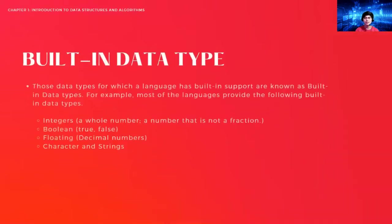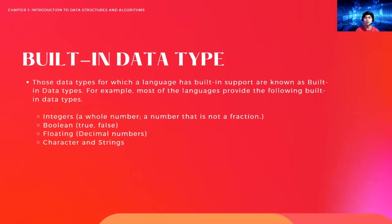When we say built-in, it means the language itself supports these data types. The most common built-in data types are: integers — whole numbers that are not fractions; boolean — true or false, one or zero; floating — decimal numbers; character; and strings. There are more, but these are the basic built-in data types. I'll link another video below that explains these in more detail.